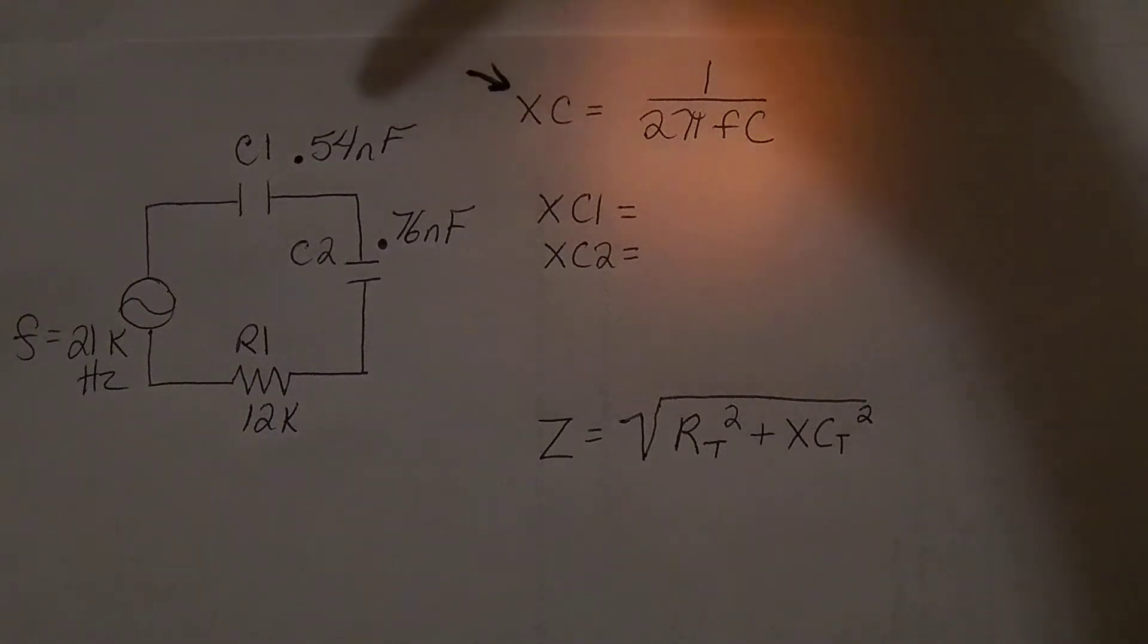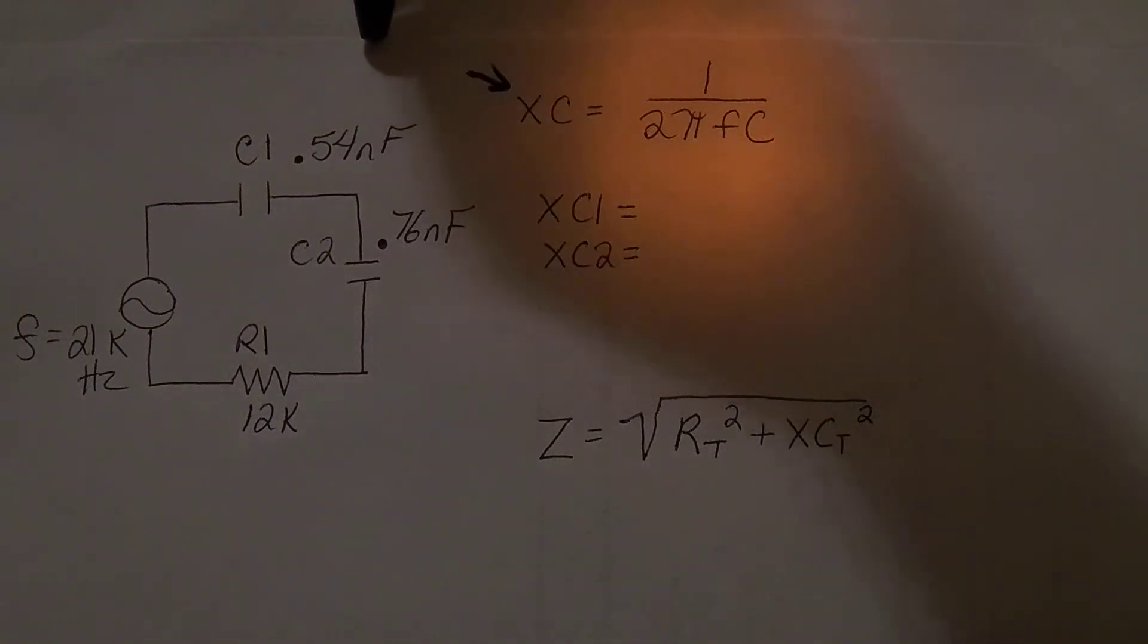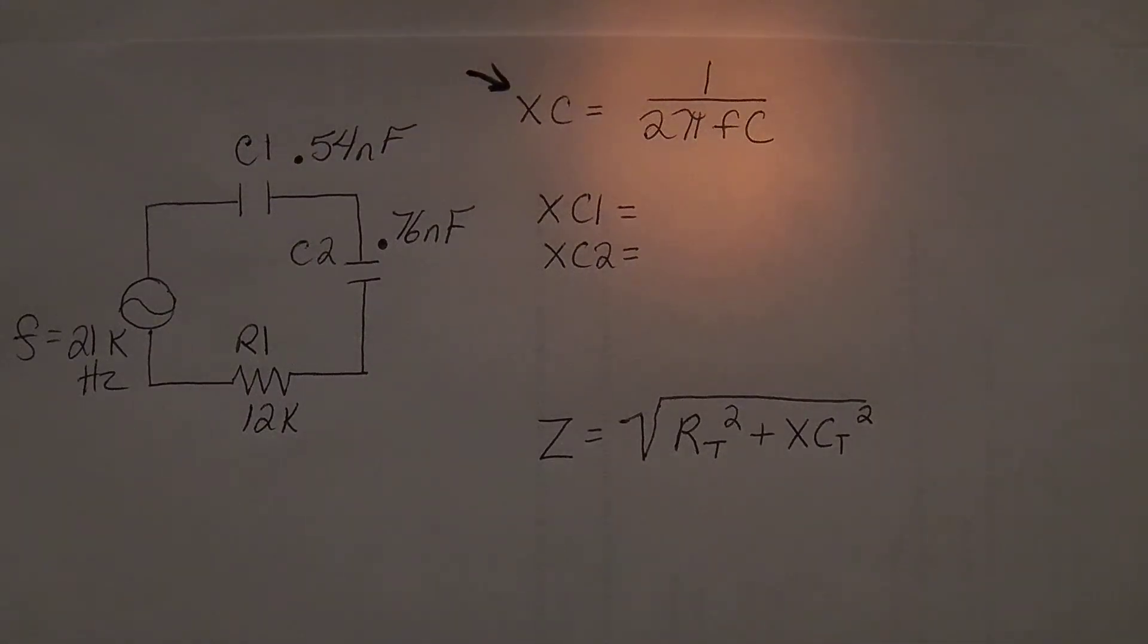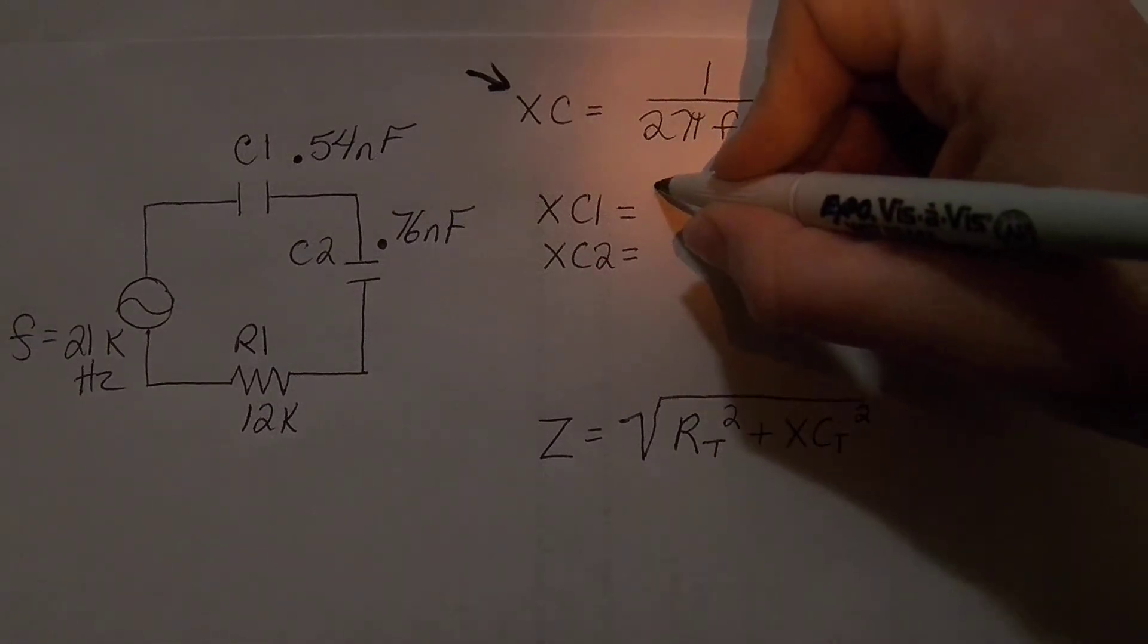So I am going to get the capacitive reactance for XC1 first, so I will use 0.54 nano. So I'll put 0.54 shift and that is nano, so nano is above 3, and then I will equal that and then invert it and then press equals again, and I get XC1 is 14.04 kilo ohms.